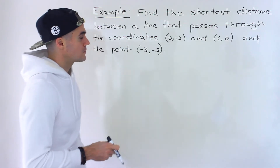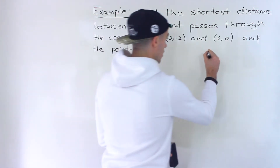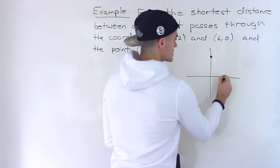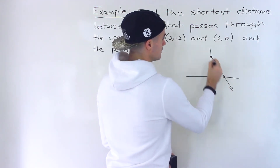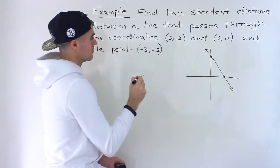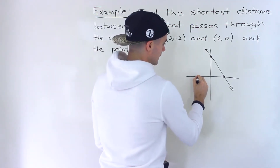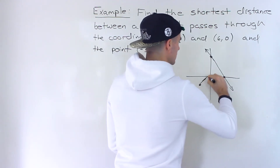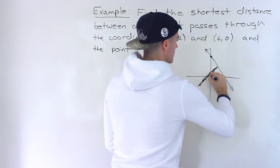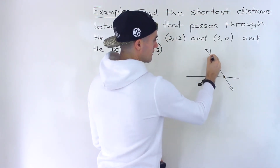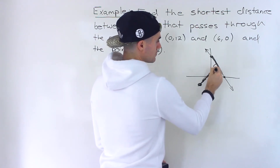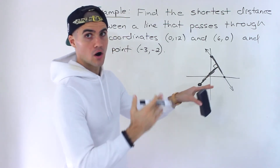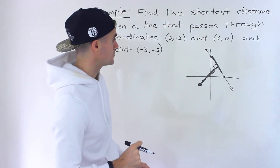Let's first draw a rough diagram of what's happening. We've got (0, 12) up here, (6, 0) over here, so we have this line. Then we have the point (-3, -2) down here. We've got to find the shortest distance between this point and this line, and that shortest distance is where the distance line and this line are at a right angle — they're perpendicular to each other.